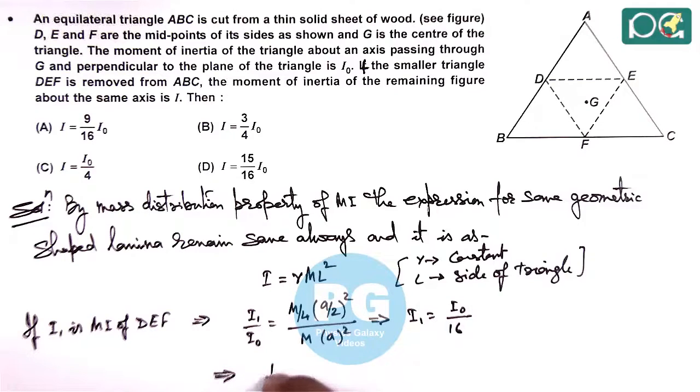This implies I of ABC minus DEF, which is what the question is asking, is I₀ minus I₁.